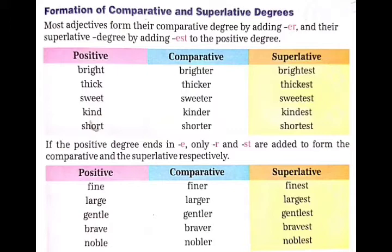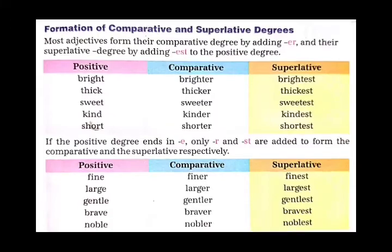यहाँ पर भी कुछ positive, comparative, superlative degree दिए गये हैं. जैसे: fine, finer, finest; large, larger, largest; gentle, gentler, gentlest; brave, braver, bravest; noble, nobler, noblest.